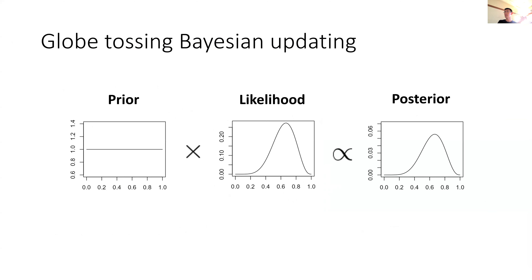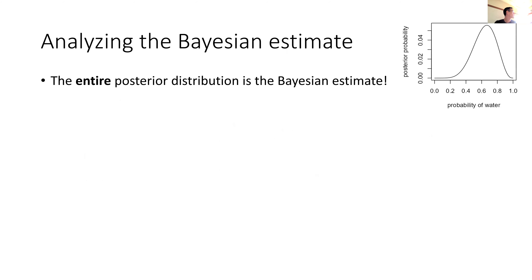Graphically, here's what's happening with the Bayesian updating. We start off with our uniform prior — before seeing data, we assume each proportion p of water is equally likely. We then update our prior belief by multiplying it by the data likelihood, which gives us our posterior distribution. The nice thing about Bayesian inference is that the posterior distribution contains everything we need for downstream analysis. It incorporates all uncertainty from the prior and updates that with information from the data using the likelihood.